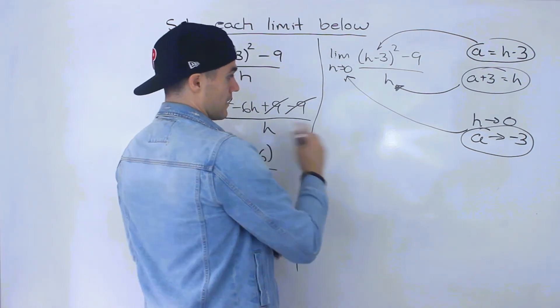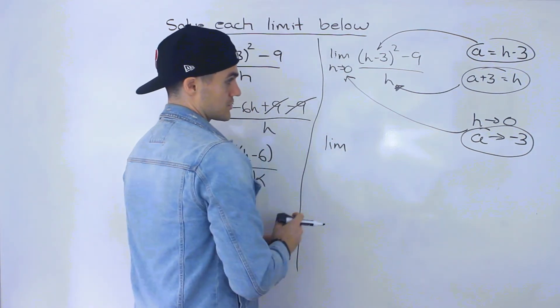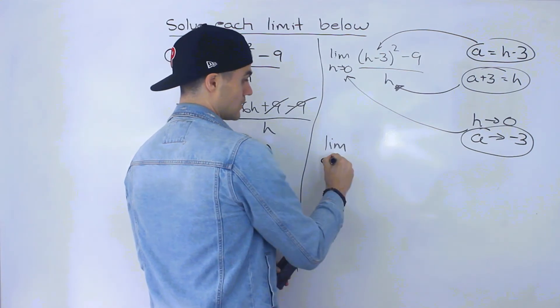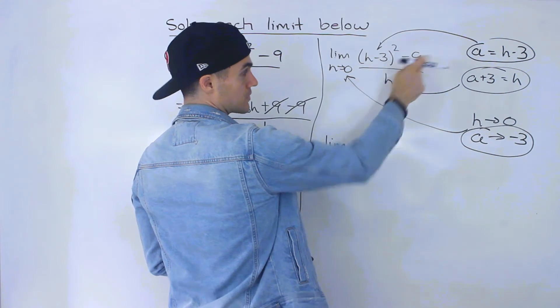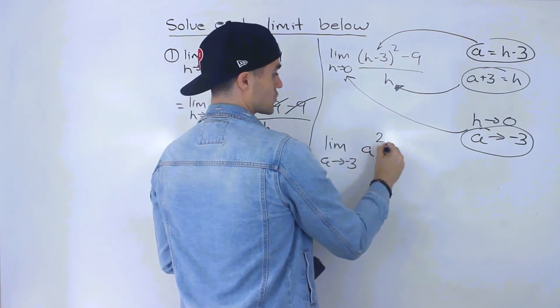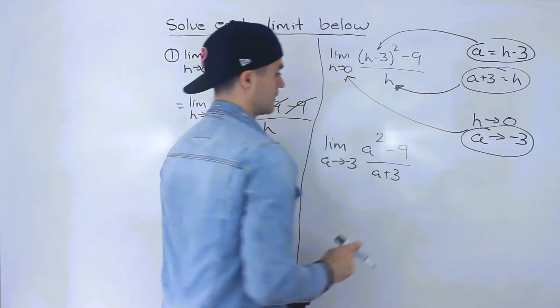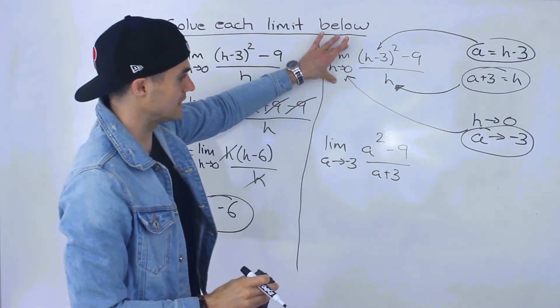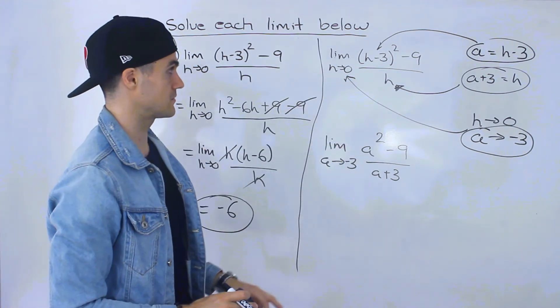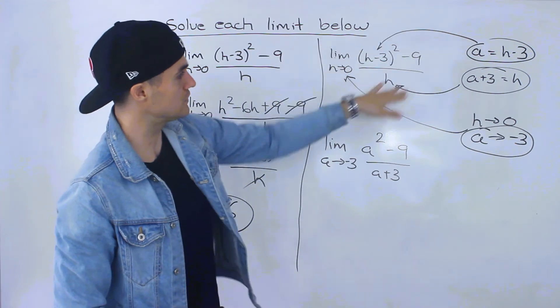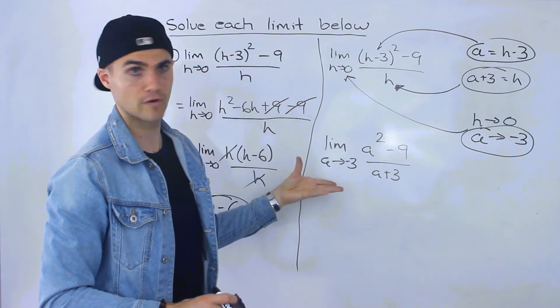Okay so now if we rewrite our new limit not in terms of h in terms of a we have as a goes to negative 3. This h minus 3 we're subbing in a there so we'll have a squared minus 9. And then for this h we're plugging in a plus 3. And so this limit and this limit are actually the same thing. They're going to give you the same answer. So we basically took all of these h values and made a new change of variable brought in a new variable a.